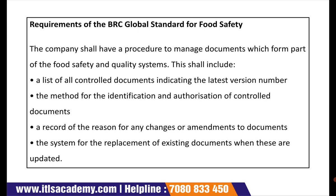Now, coming to the requirements of the BRC Global Standard for Food Safety. The first requirement is the company shall have a procedure to manage documents which form a part of the food safety and quality system. This shall include: a list of all the controlled documents indicating the latest version number; second, the method for identification and authorization of controlled documents; third, a record of the reason for any changes or amendments to the document; and the last is the system for the replacement of existing documents when these are updated.